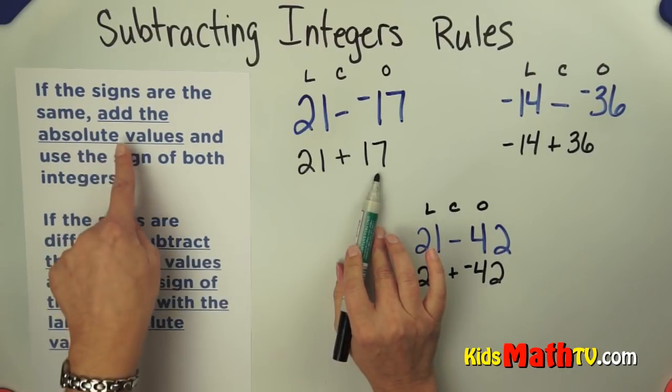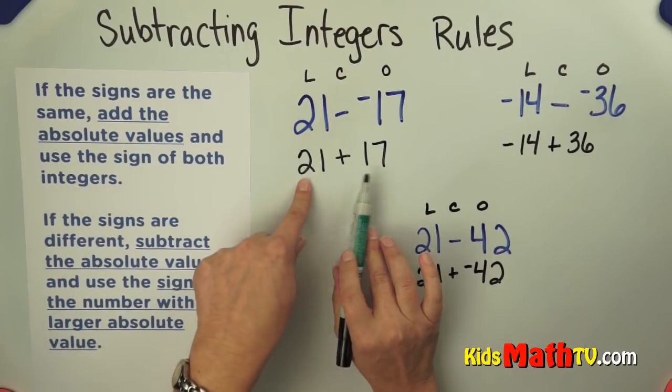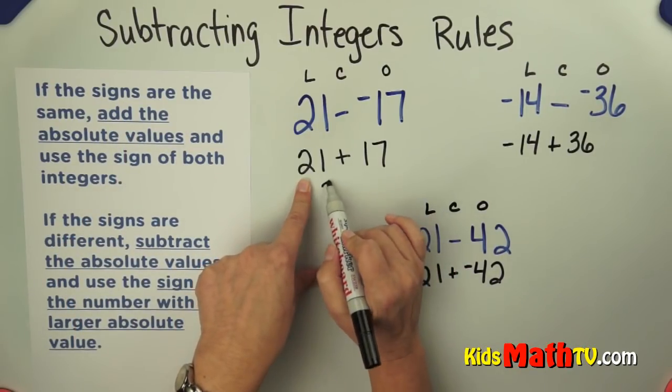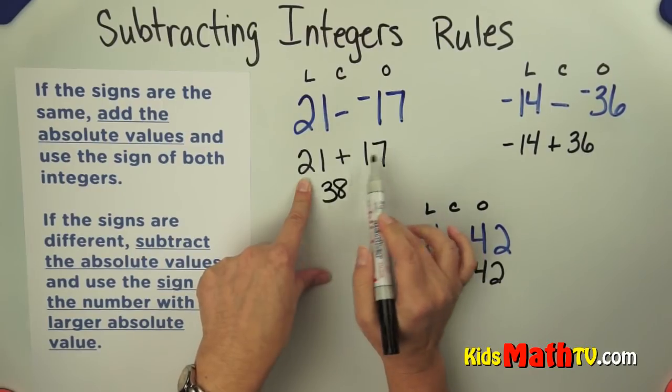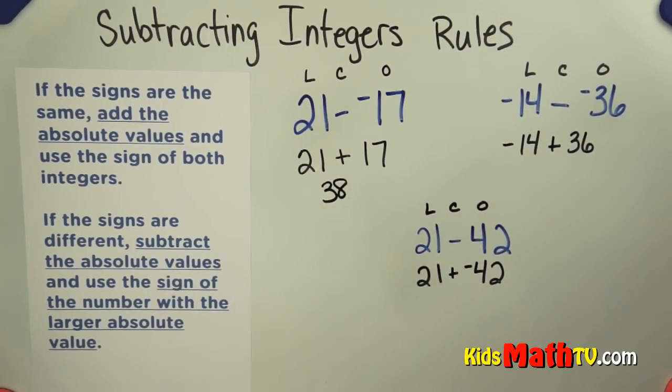They're the same here, so I add the absolute values. 21 and 17 is 38, and it gets the sign of both the absolute values.